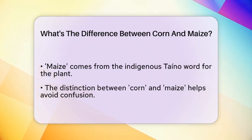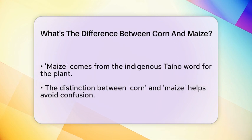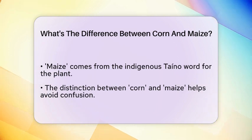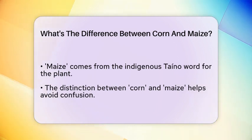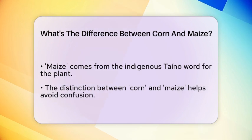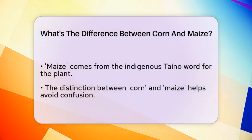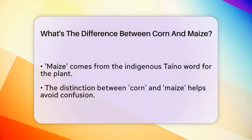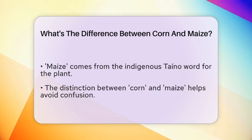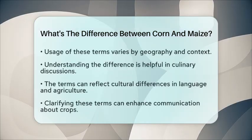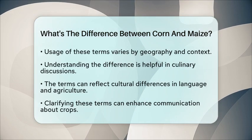On the other hand, maize is the term used in many countries, including scientific and agricultural contexts, to specifically describe the plant known scientifically as Zea mays. This term is derived from the indigenous Taíno word for the plant and is used to avoid confusion with other grains.